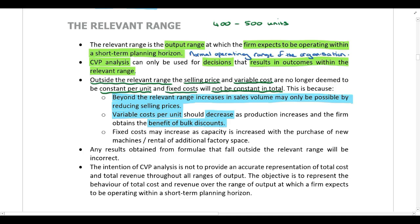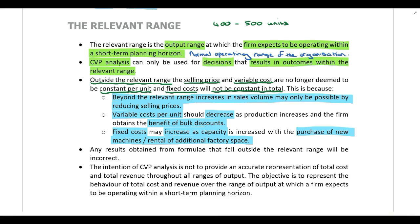On the other hand, your fixed cost in total should increase if we move outside of the relevant range, because if we need to increase capacity, that could result in new machines having to be purchased or rental of additional factory space, all of which increase fixed costs. So all of these things are only constant within the relevant range. Outside of it, everything starts to change, meaning any results obtained from formulas that fall outside of the relevant range will be incorrect.